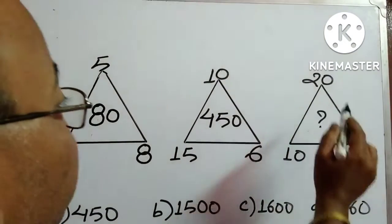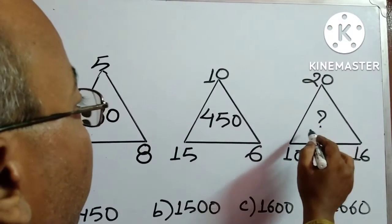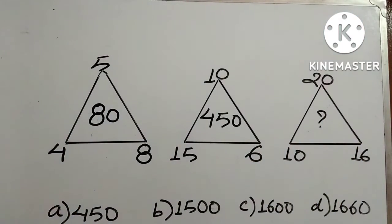In the third triangle, 10, 20, 16 is given and we have to find out this number and the four options are given.